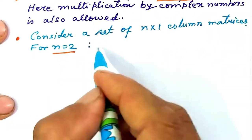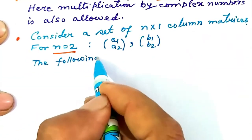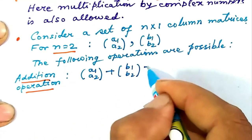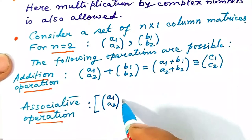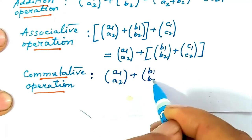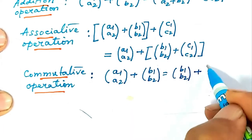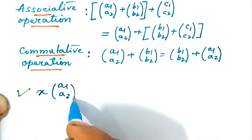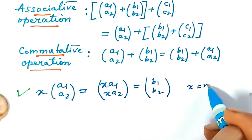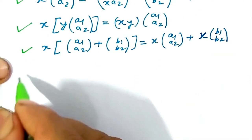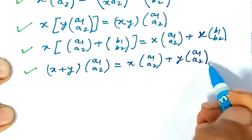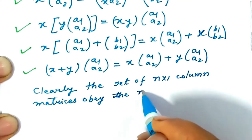Consider a set of n×1 column matrices. For n=2, take column matrices (a1, a2) and (b1, b2). Addition: column (a1, a2) plus column (b1, b2) equals column (c1, c2). Commutativity holds. Scalar multiplication: x times column (a1, a2) equals column (xa1, xa2). Also, (x+y) times column (a1, a2) follows the distributive rule. Clearly, the set of n×1 column matrices obeys all the rules of a linear vector space.